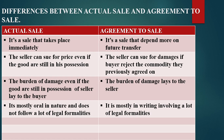In actual sale, the seller can sue you for the price, even if the goods are still in his possession, because those goods are now legally in the possession of the buyer. In agreement to sale, the seller can sue you for damages if the buyer rejects the commodity they previously agreed on — for instance, where the logbook has already been processed with the buyer's name and the buyer then repudiates the contract. The burden of damage, even if goods are still in possession of the seller, passes to the buyer.